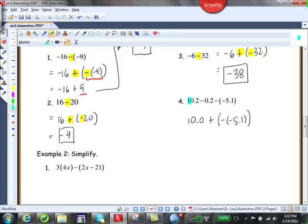So 10.2 minus 0.2 gave us 10.0, and then this minus was changed into plus and negative. So we'll have 10.0 plus a positive 5.1 which yields a result of 15.1.